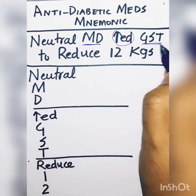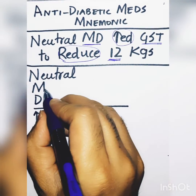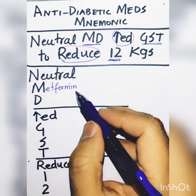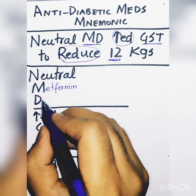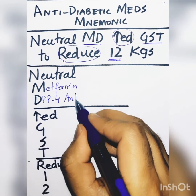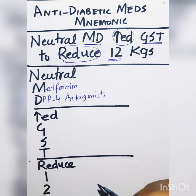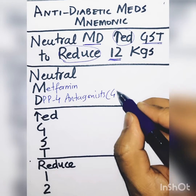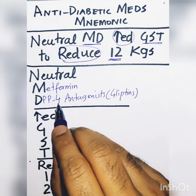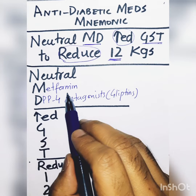Three medications will increase the weight. In the 'Neutral MD' group, M stands for metformin, which is usually the first-line treatment in type 2 diabetics. D stands for DPP-4 antagonists — these are dipeptidyl peptidase inhibitors, also known as gliptins. These two medications are weight neutral; they don't increase or decrease weight. Metformin was previously thought to decrease weight, but recent research shows it doesn't significantly affect weight.